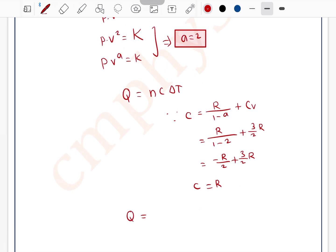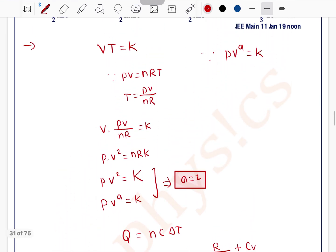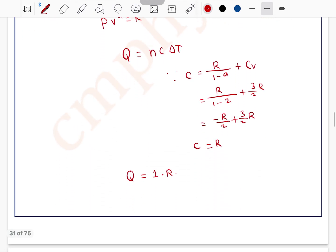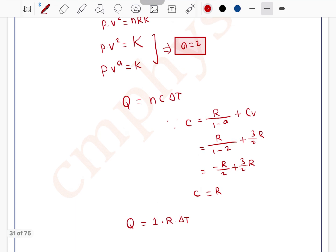Q equals n, Q equals 1 mole of ideal monoatomic gas into R into delta T. Change in temperature is delta T only. Q equals R into delta T. Let me check here. I think R into delta T is not an option.